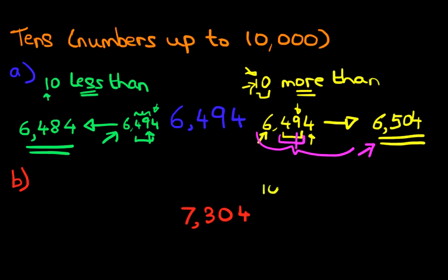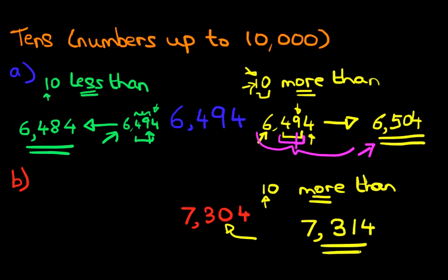So on this side, we're going to do 10 more than 7,304. More than means we're going to be counting forwards. And in this one, we're not going to do any workings because it's very simple. The only digit that's going to change is the 0, which is going to go forward by 1. That's this 1 here. So the number is 7,300, it's not 0, it's 1, and then 4. 7,314. It's that simple.